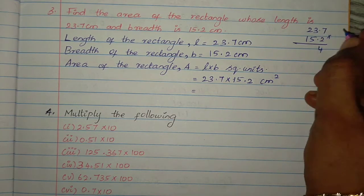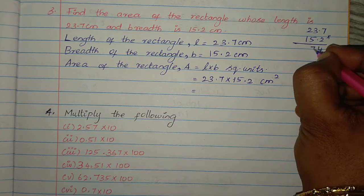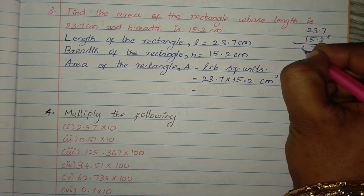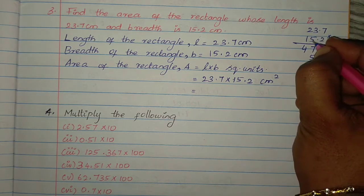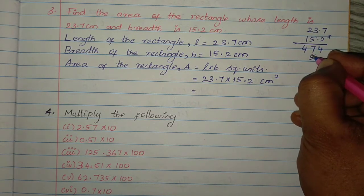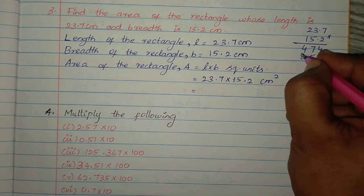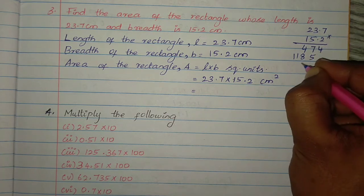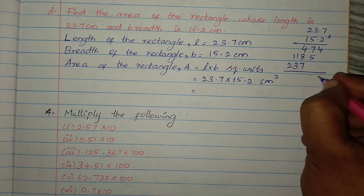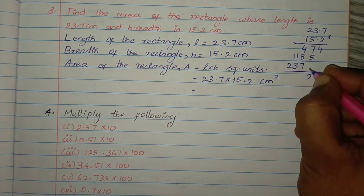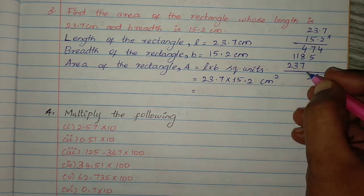7 twos are 14, balance 1. 3 twos are 6 plus 1 = 7. 2 twos are 4. 5 sevens are 35, balance 3. 3 fives are 15 plus 3, balance 1. 5 twos are 10 plus 1 = 11. Then: 4, 12, 1, 20.